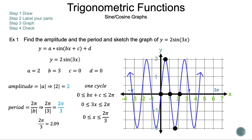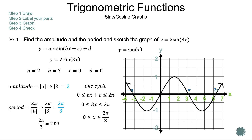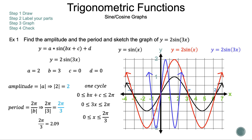Now let's check. First let's change our graph to y = sin(x). Now let's graph y = 2 sin(x) — the amplitude increases, so we have a vertical stretch, but the period remained the same. Now let's graph y = 2 sin(3x) — this time the amplitude stayed the same but our period shrunk, so we have a horizontal shrink. And there we have it — that is example 1.